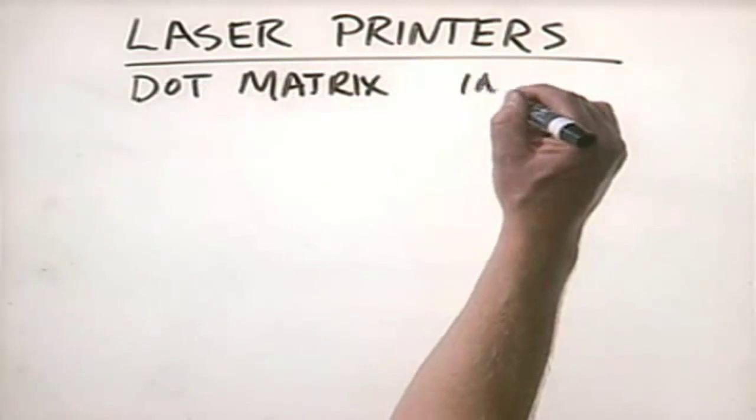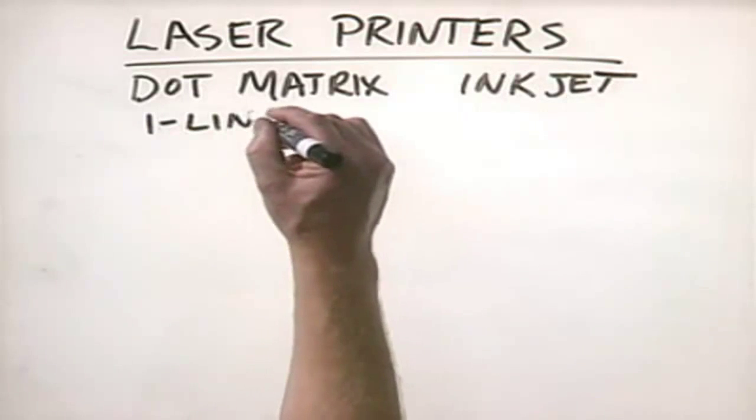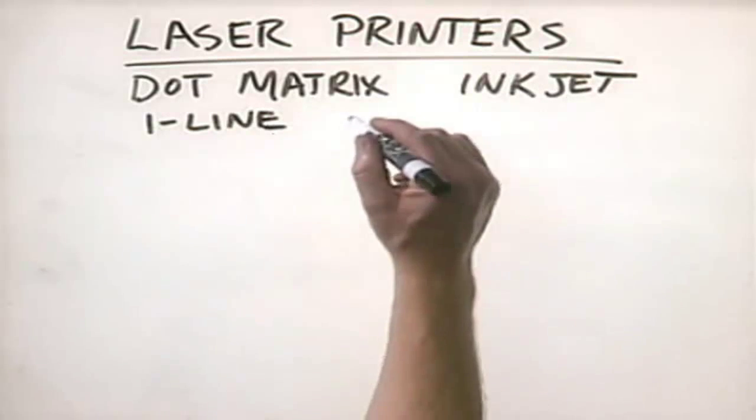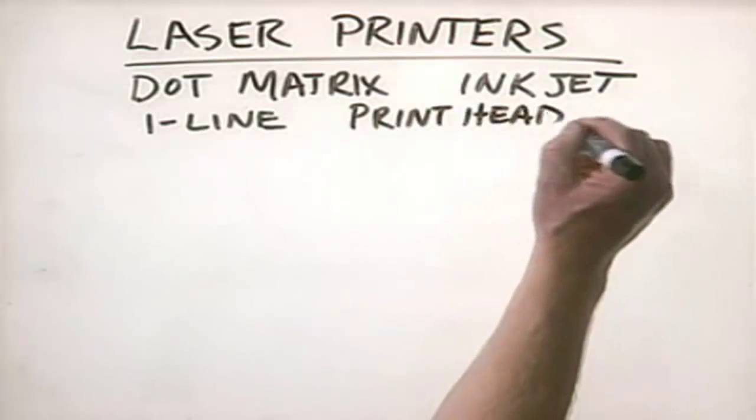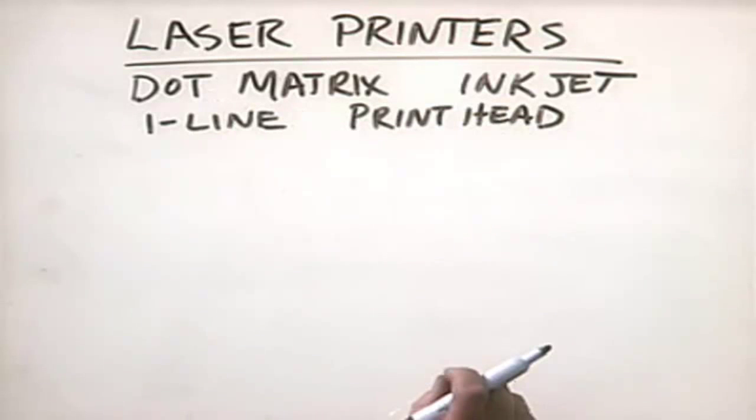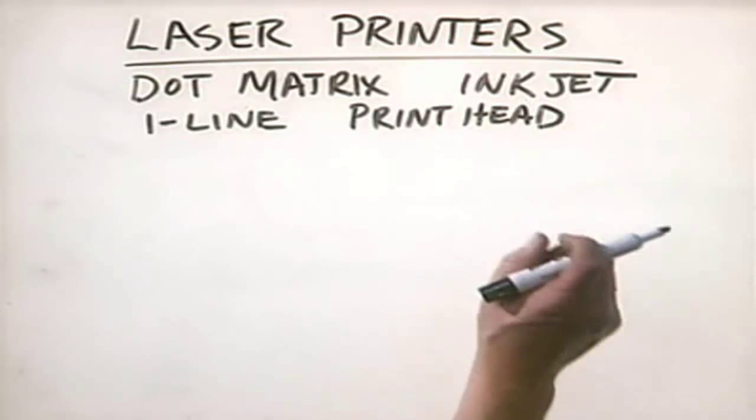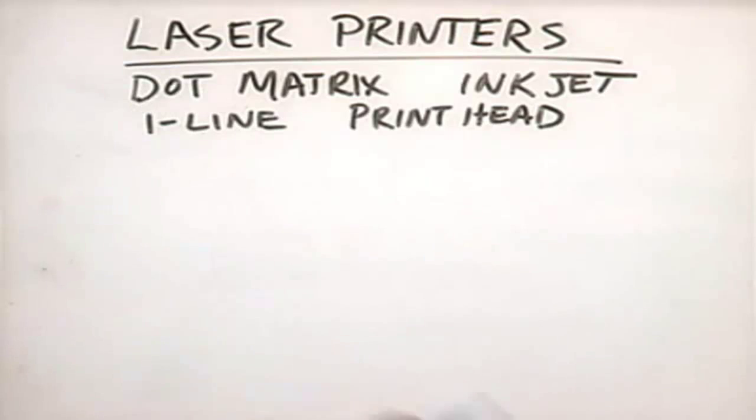They use a print head. On a dot matrix printer we have a head that has little pins inside of it that reach out and smack the paper through a ribbon, transferring ink onto the paper. With an inkjet we boil ink inside an ink reservoir and shoot a jet of ink out onto the paper. With laser printers we do not use either of those types of technologies.